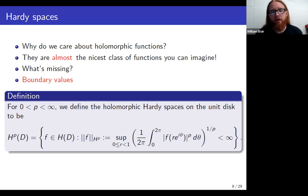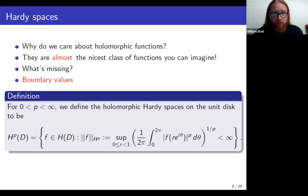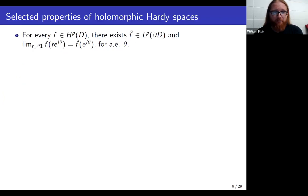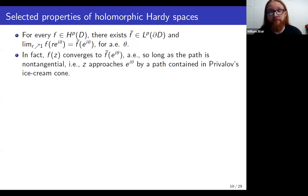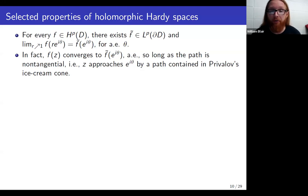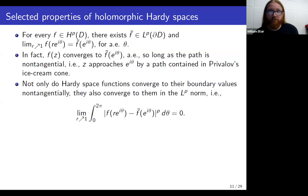For p a positive real number, the holomorphic Hardy spaces on the unit disk are those holomorphic functions which have finite H^p norms. So why is this the correct class of functions to look at? Holomorphic Hardy space functions have radial boundary values, and those radial boundary values are in the corresponding L^p spaces on the circle. Not only do they converge to their boundary values along radial paths, they converge along non-tangential paths — paths contained in Privalov's ice cream cone, also known as a Stoltz region or non-tangential approach region — and also in the corresponding L^p norm.